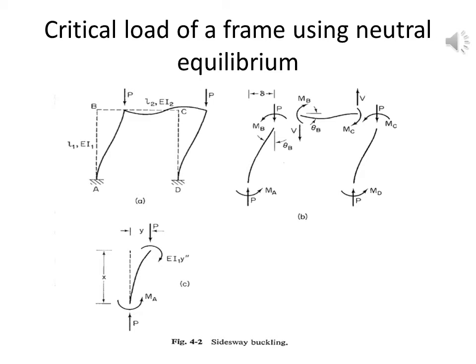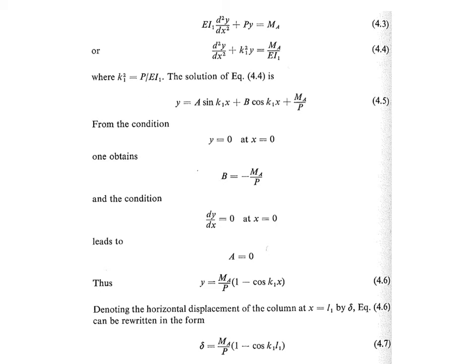It should be noted that the shears V arising from the bending of the horizontal member are neglected in comparison to the applied load P when dealing with the vertical members. Taking the coordinate axis, the equation of moment equilibrium for the vertical members can be written as EI₁ d²y/dx² + Py = MA. Bringing EI₁ to the denominator gives d²y/dx² + K₁²y = MA/EI₁, where K₁² = P/EI₁. The solution is y = A sin(K₁x) + B cos(K₁x) + MA/P.